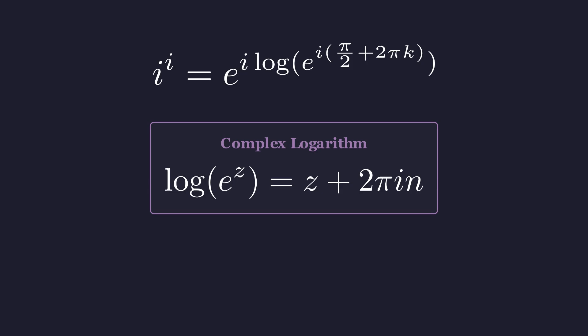However, because our formula for i already includes the 2 pi k term, it cleverly contains all the possible values. So in this specific case, we can proceed with the cancellation.